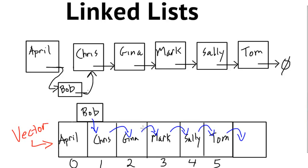While the vector doesn't excel at insertions and deletions, it does excel at being able to access any particular element in a constant amount of time. We can just specify the name of the vector and a particular index value and immediately get to that element. Whereas with the linked list, we would have to start at April and follow the links through Bob, Chris, Gina, and then finally get to Mark. So it takes more time — it's actually a function of the number of elements and grows linearly.